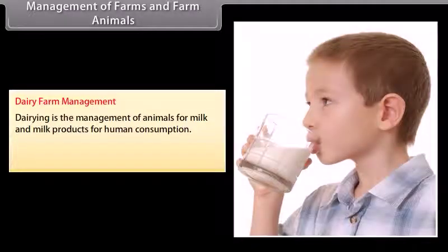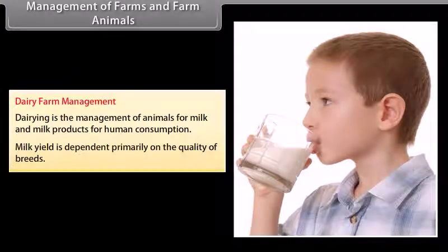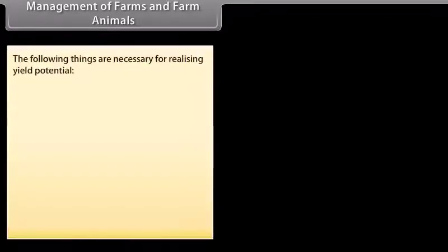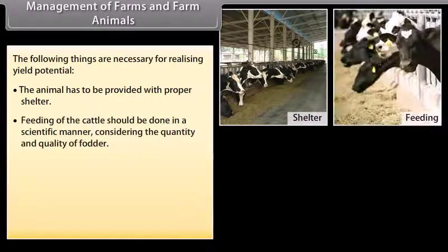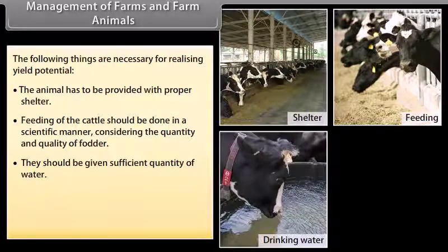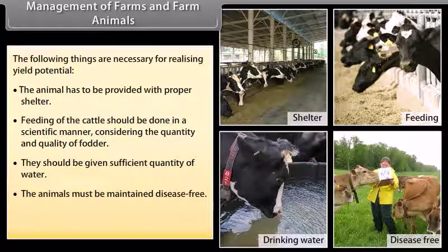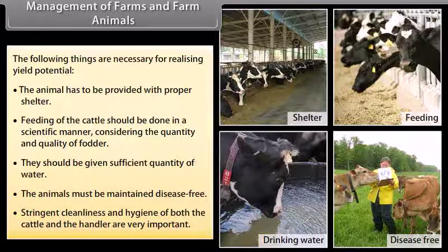Management of farms and farm animals. Dairy farm management. Dairy is the management of animals for milk and milk products for human consumption. Milk yield is dependent primarily on the quality of breed. The animal has to be provided with proper shelter; feeding of the cattle should be done in a scientific manner, considering the quantity and quality of fodder.